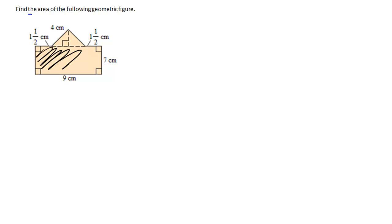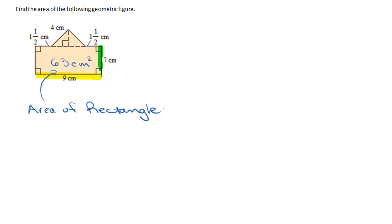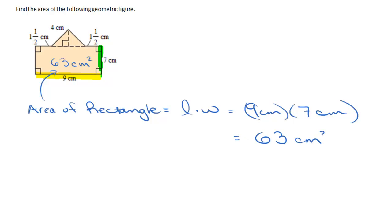We're going to start by finding the area of the rectangle — the one I shaded in here. To find that, we multiply the length times the width: 9 times 7 is 63, so the area of the rectangle is 63 centimeters squared. That's length times width, 9 centimeters times 7 centimeters.